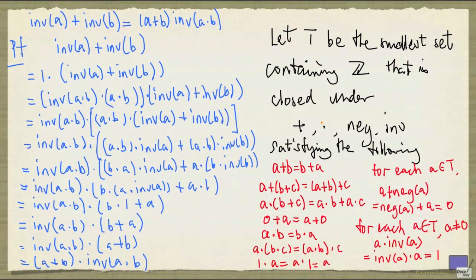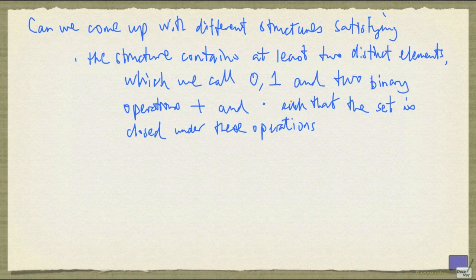And more precisely, what kind of structures could we come up with that satisfy the following? So the set underlying the structure contains at least two distinct elements, which we'll call 0 and 1, and two binary operations, plus and times, such that the set is closed under these operations. And the following properties hold for this structure.